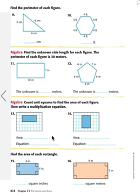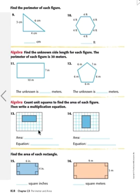Now let's go on to number 13. It says count the unit squares to find the area, and then write a multiplication equation. So it looks like we have 1, 2, 3, 4, 5, 6, 7, 8, 9, 10. The area is 10. And if I want to write a multiplication sentence, I can go 2 times 5 is 10, or 5 times 2 is 10. Either way, it works.